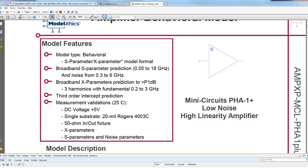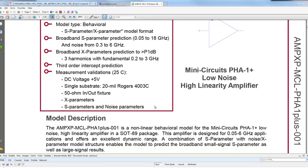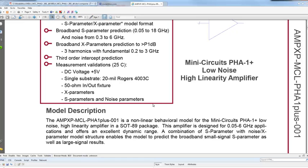In this case, the model predicts in the linear mode S-parameters up to 18 gigahertz, noise up to 6 gigahertz, and the X-parameter mode will allow for nonlinearities predicted with three harmonics captured from 0.2 to 3 gigahertz. This particular model was developed from measurements on a 20 mil Rogers board. The recommended voltage from Mini-Circuits for this amplifier was used at 5 volts.